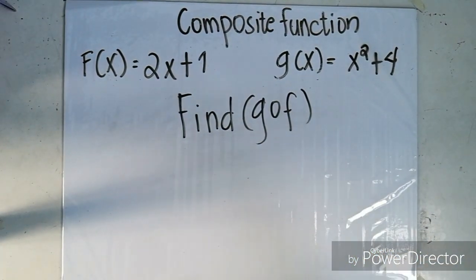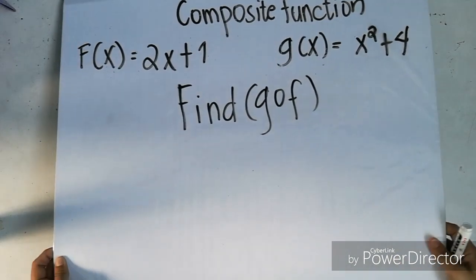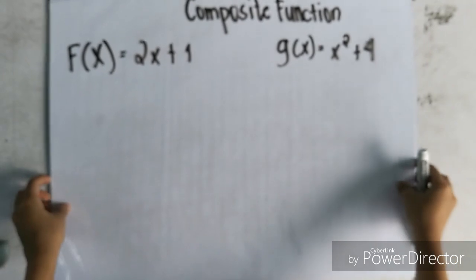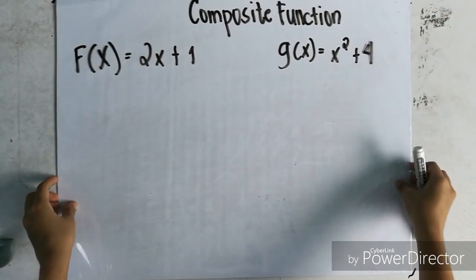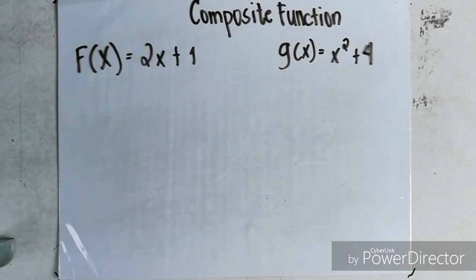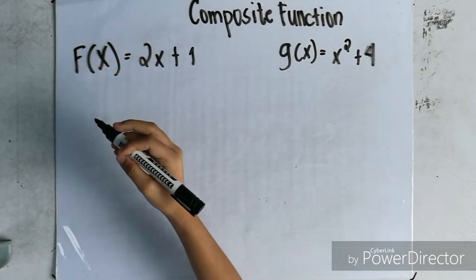The given is f(x) = 2x plus 1 and g(x) = x squared plus 4. Find g of f. f(x) = 2x plus 1 and g(x) = x squared plus 4.